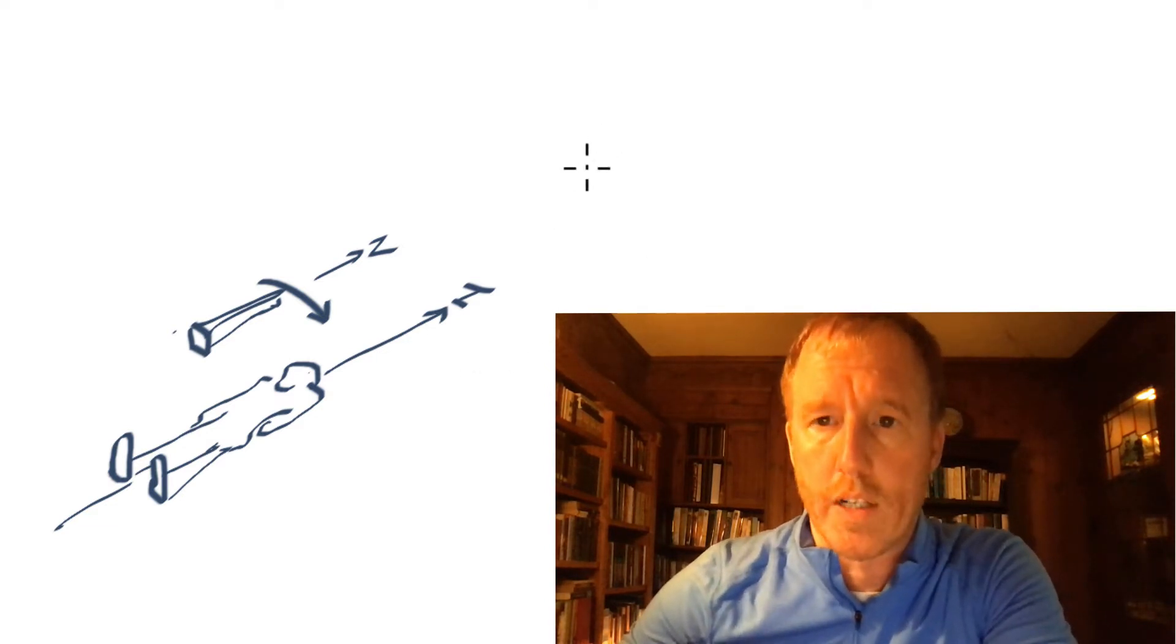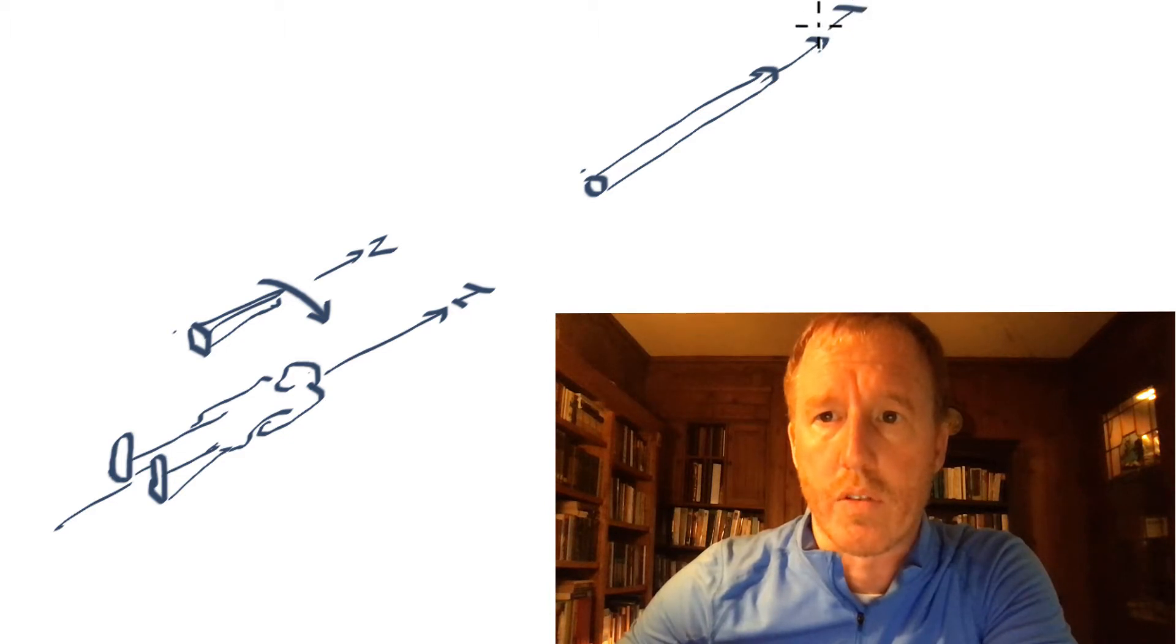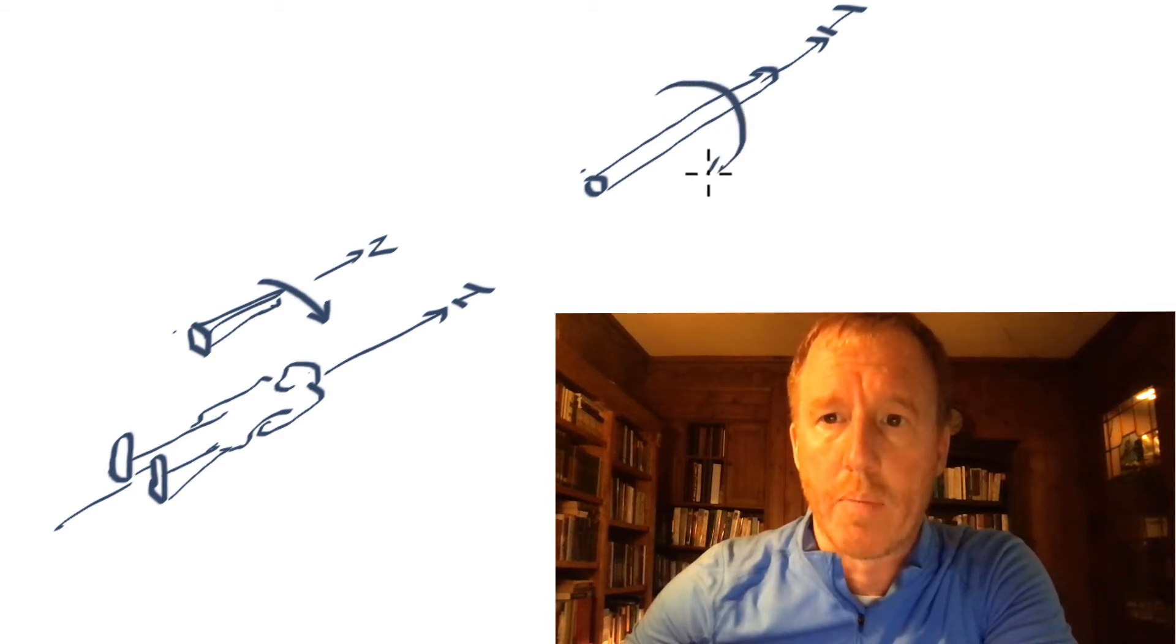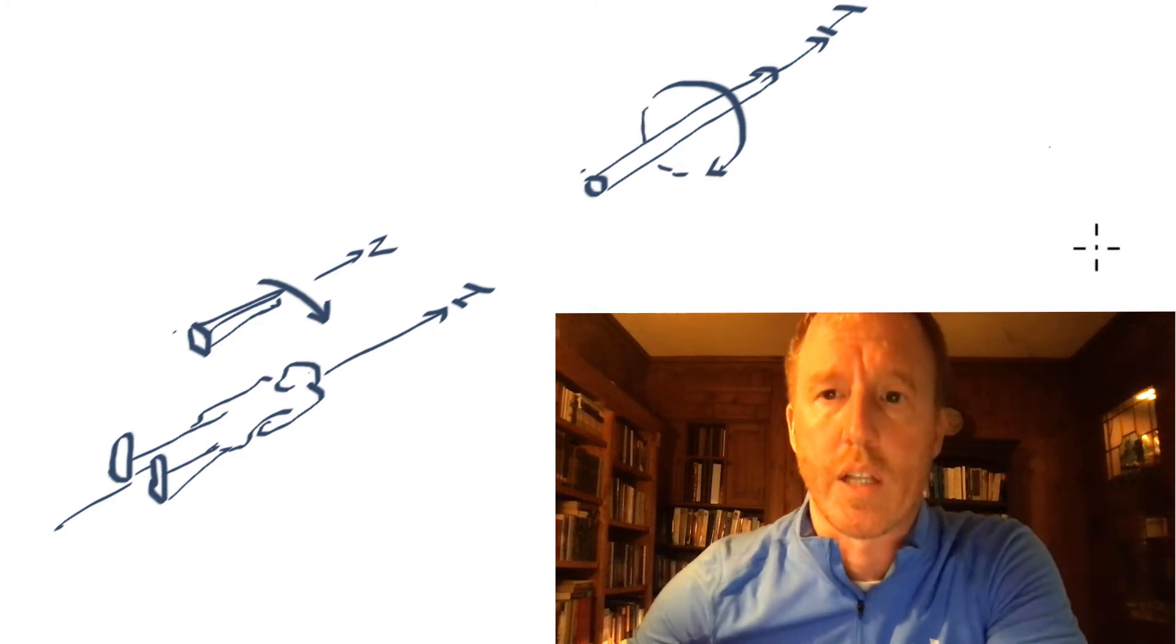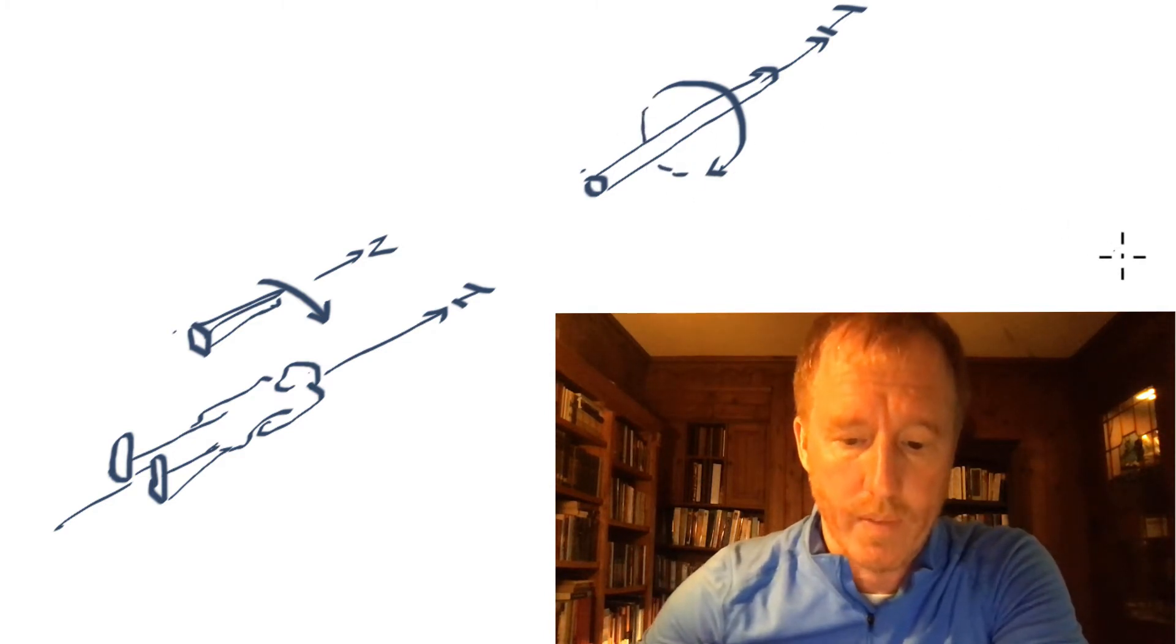Of course, we could use a right-hand rule, which gives us exactly the same picture. If we take a wire and we have a current going through it in this direction, and then we wrap our right hand around this wire so that our thumb points in the direction of the current, we'll arrive at a magnetic field that is going around in this direction, which is the direction that the compass needle will point. Okay, so this is what he talks about on page 87.